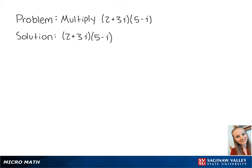For this problem, we want to multiply the complex numbers 2 plus 3i and 5 minus i. We're going to multiply these just like we would multiply binomials.